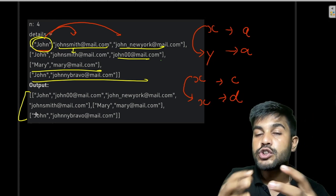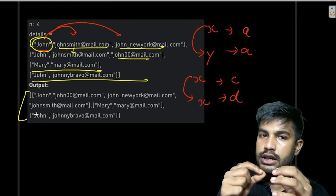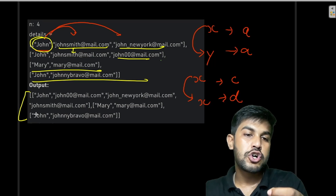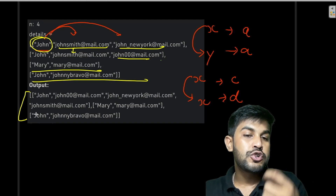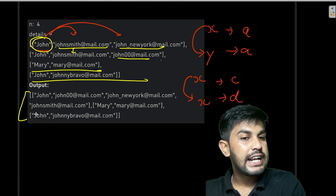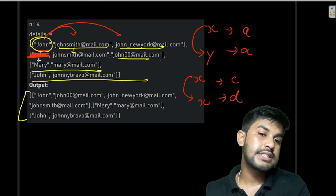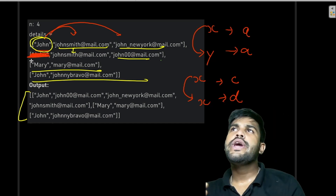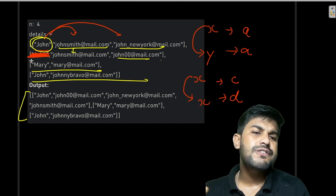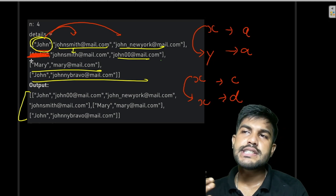For each person, we check: suppose we have John Smith, we check against Mary and the next John. If john_smith is present in another person's email list, we merge them and mark that person as already processed. So for a particular element we check all other elements.